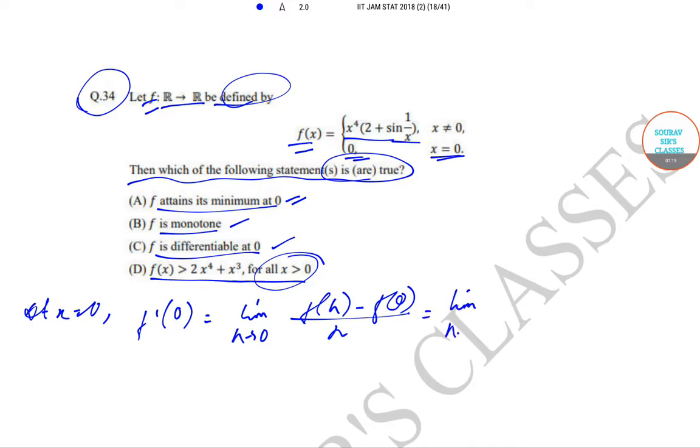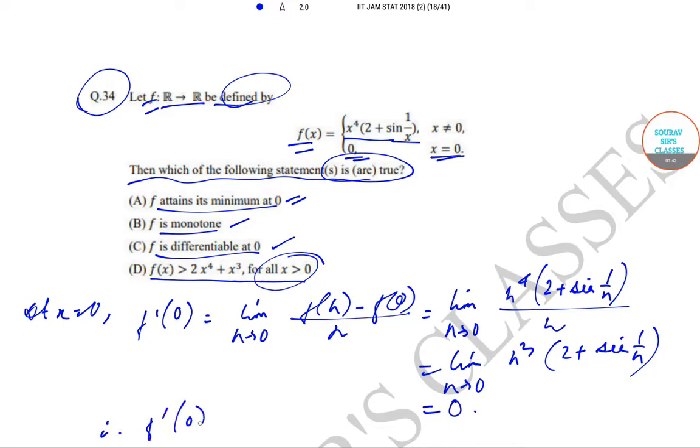So this will be equal to limit h tends to 0 of h^4 times 2 plus sine of 1/h, which will ultimately equal 0. Therefore f dash 0 is equal to 0 and f is differentiable at x equal to 0.